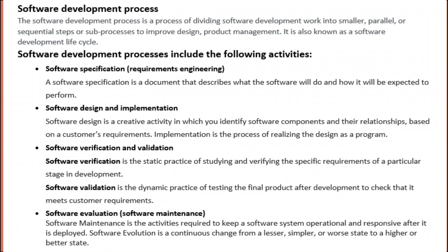A software specification is a document that describes what the software will do and how it will be expected to perform. Software design and implementation: software design is a creative activity in which you identify software components and their relationships based on a customer's requirements. Implementation is the process of realizing the design as a program.